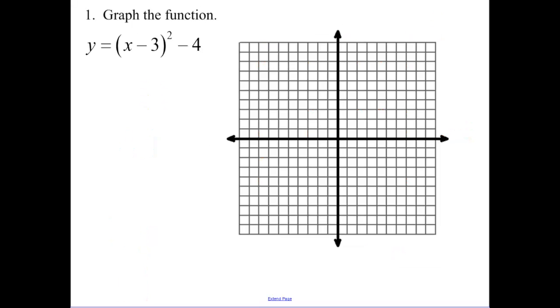So our first example. Graph the function. Let's first give our translations. Minus 3 means I go 3 to the right. Minus 4 means I'm down 4. So our vertex is at 3, negative 4. So I plot that point. Plot 1, 2, 3, negative 4.